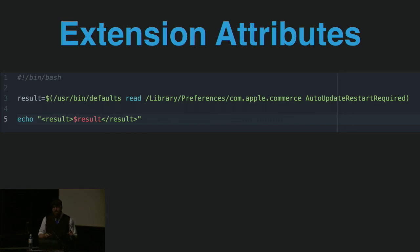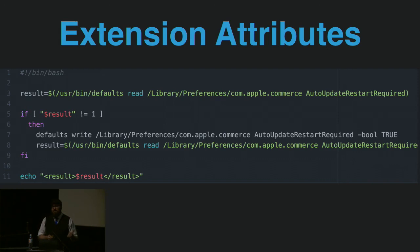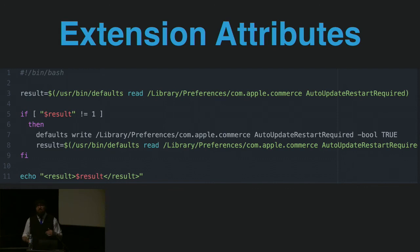Now you could create a smart group and a policy that runs a command to fix this, but since we're already running a bash script, you can actually put the logic right into your extension attribute. If it's not true, we do a simple 'defaults write' command that fixes the state, then check again to make sure it's right and echo that back into Jamf Pro. This fixes the problem right away when inventory runs, rather than having to wait for the next check-in for smart group logic to update and a policy to run.